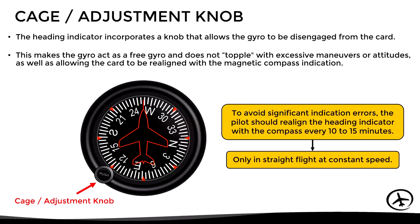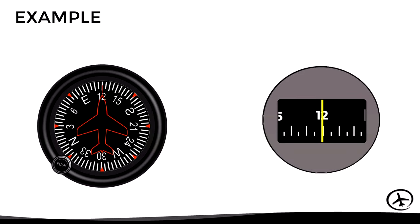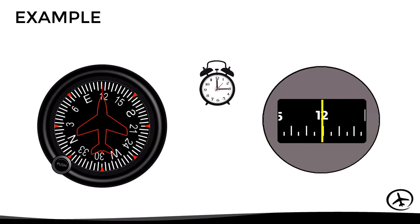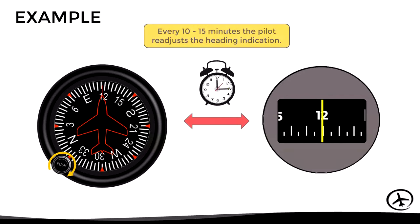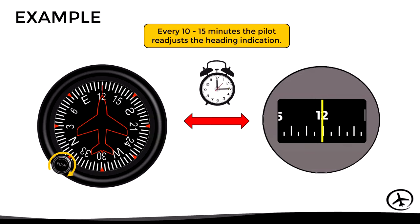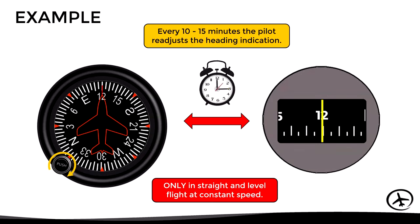Here is an example of resetting the heading indicator. Flying straight and level at heading 120, both the compass and heading indicator show the same heading. However, due to real and apparent wander, the heading indicator drifts progressively. Now the heading indicator shows 110, while the compass continues to indicate the correct heading of 120. The pilot uses the adjustment knob to reset the heading indicator to match the magnetic compass indication — again, only while flying straight and at a constant speed.